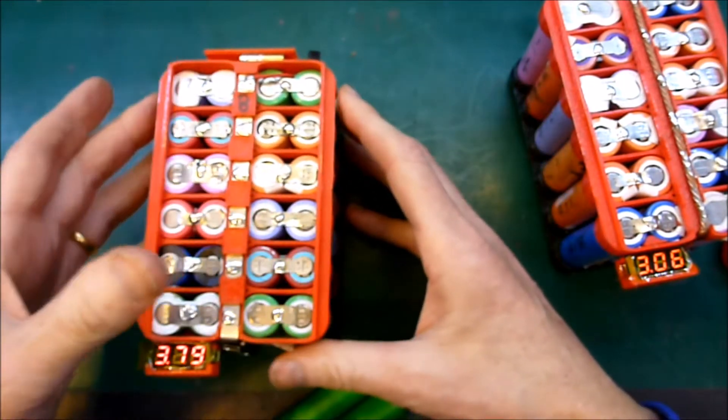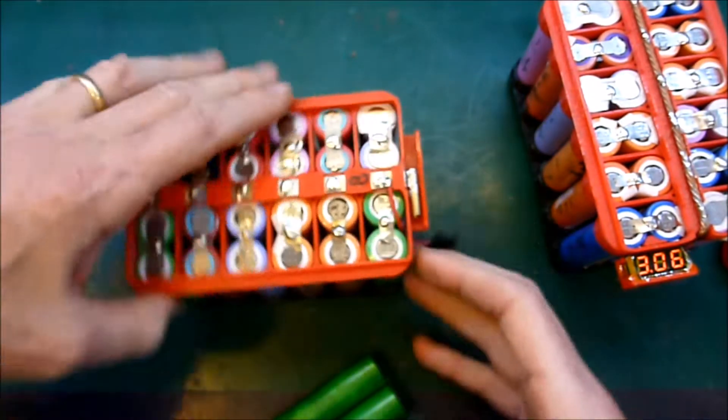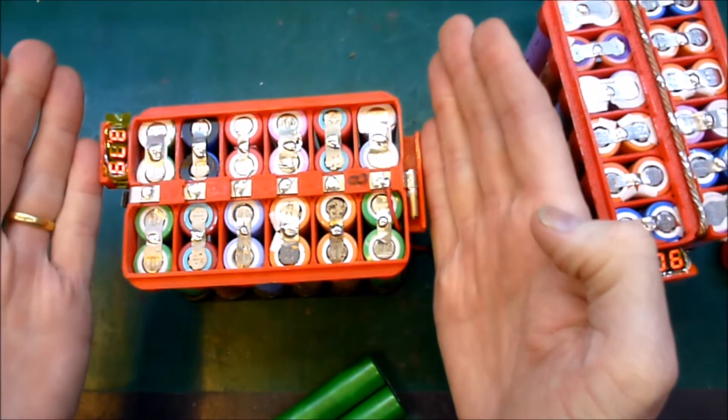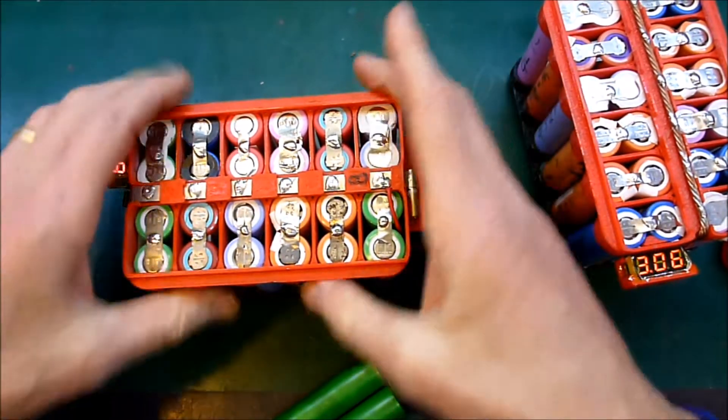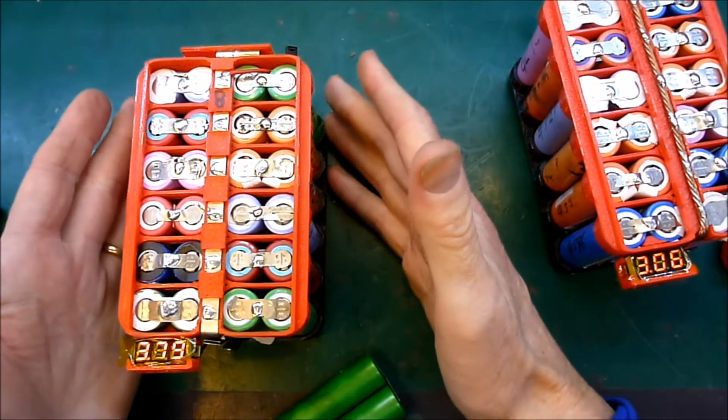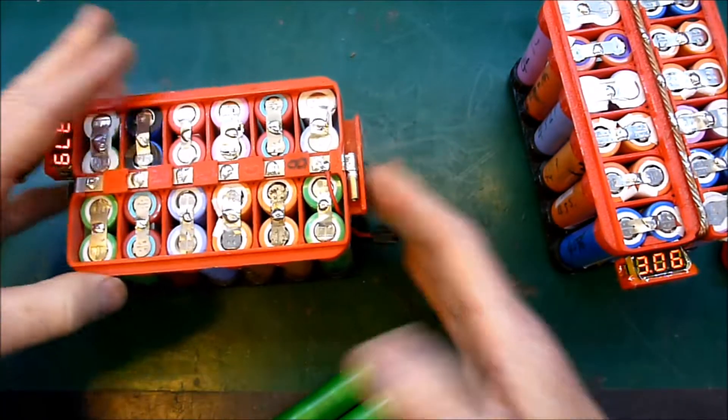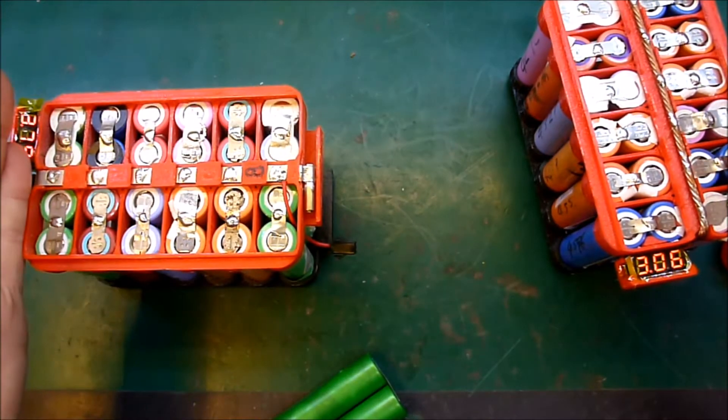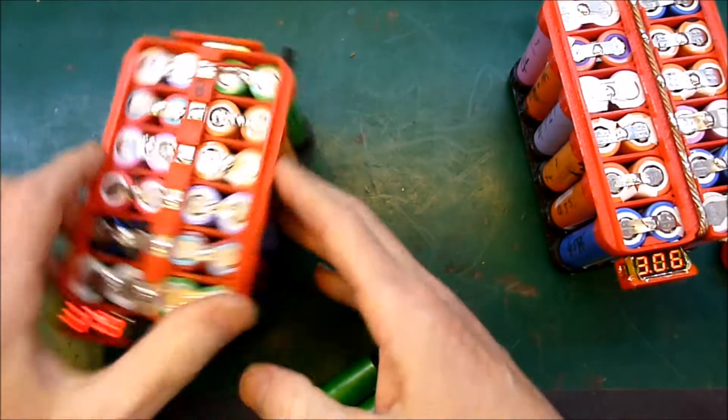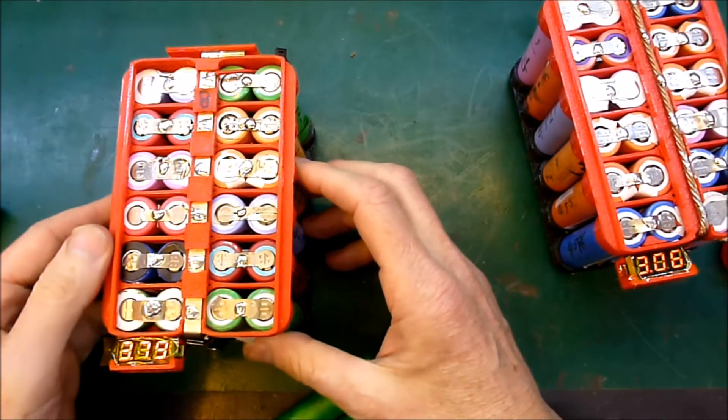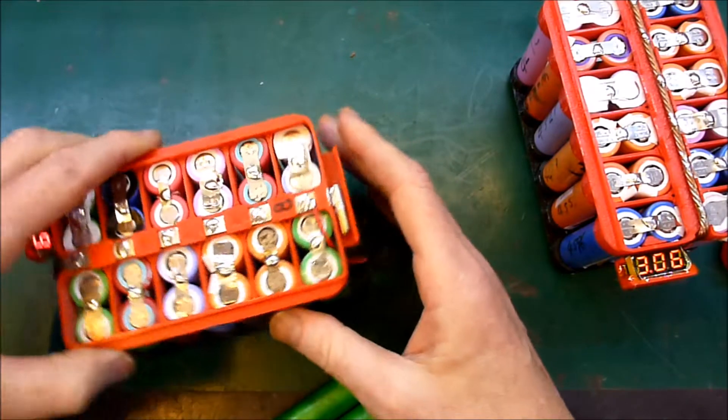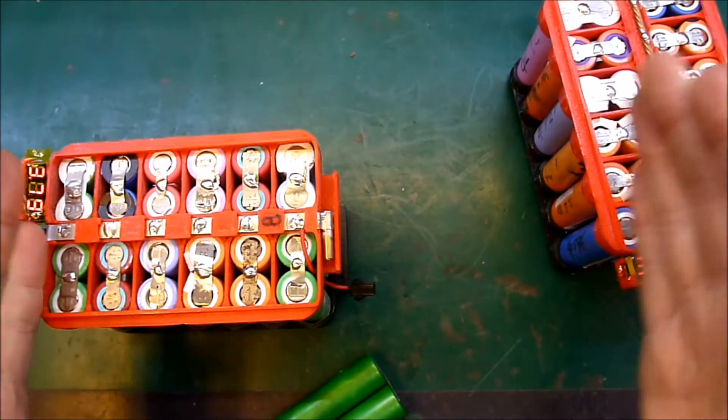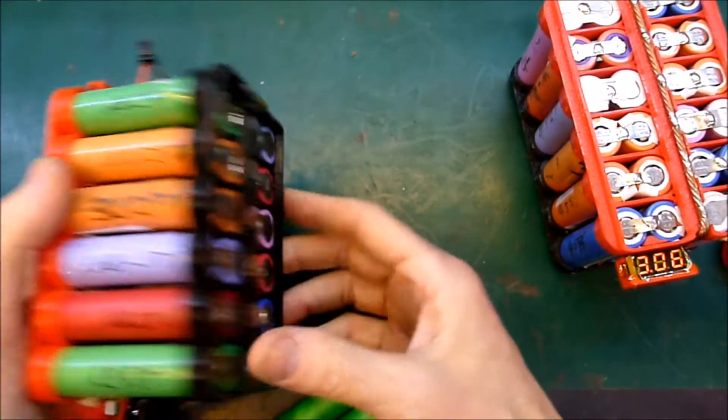The other reason is my 3D printer could only print something about that big. Funnily enough, I've just ordered a new 3D printer which can do 30cm, about a foot wide. So I'm certainly rethinking maybe doing a double width battery holder perhaps.